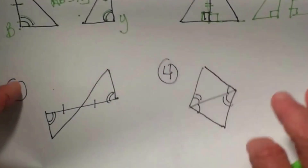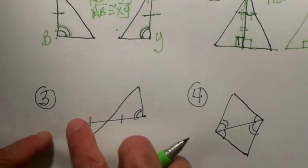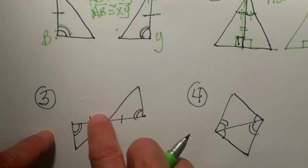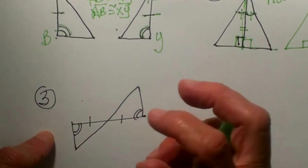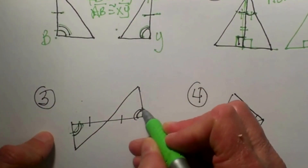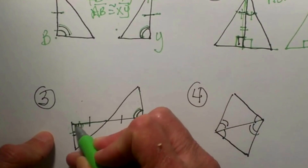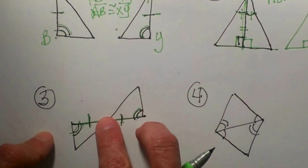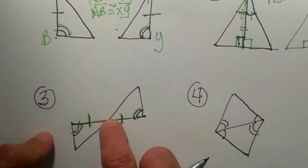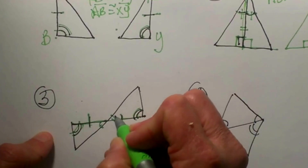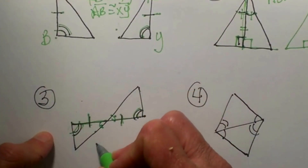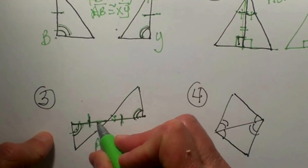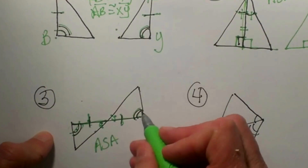In the third example, two triangles share a common vertex. We have a congruent angle and a congruent angle marked, and a congruent side on each triangle. We need the angle on the other side of that side. Notice these two angles are vertical angles, which are always congruent to each other. So we can use angle side angle here because we have an angle, an included side, and then an angle in both triangles in the same order.